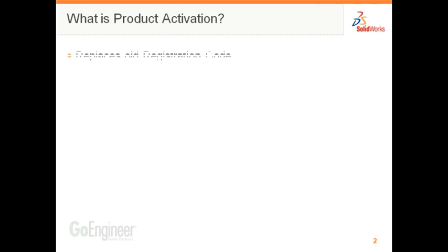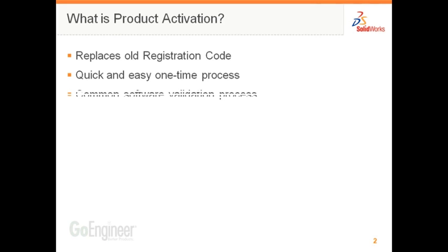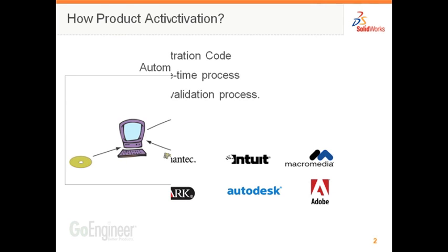What is product activation? Product activation is designed to verify a SOLIDWORKS product license and to make sure that nobody else is using your license. It replaces the old registration code process. It's a quick and easy one-time process and a common software validation process, becoming the new standard for software licensing today and is in use by many software suppliers.